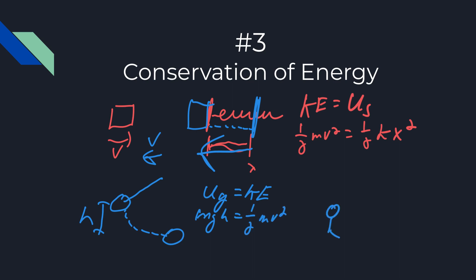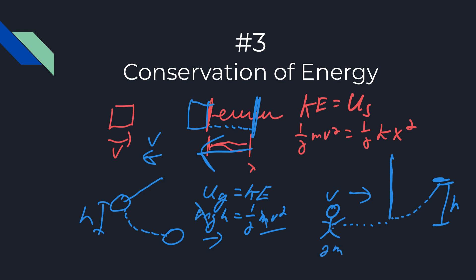Another common scenario: a person running grabs a string and swings up to a certain height. You solve it in reverse: one-half mv² = mgh. Note that the masses cancel — a common conceptual question asks what happens if you double the mass, and the answer is it doesn't affect the result. But if you double the velocity, v becomes 2v, so v² becomes 4v², giving four times the height.